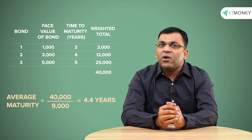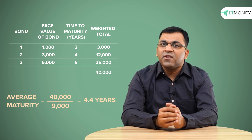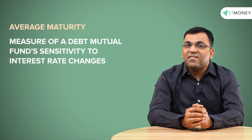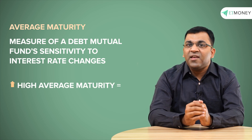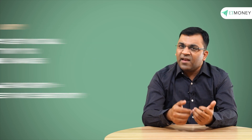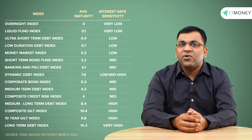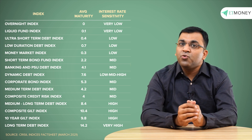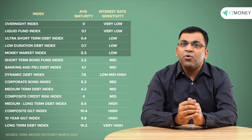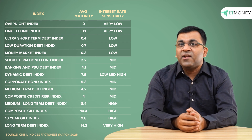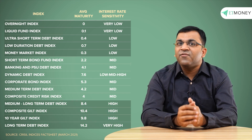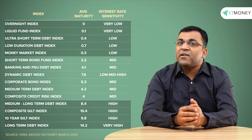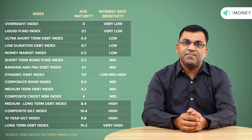The real question is: what does average maturity tell us and how do we use it when evaluating debt funds? Very simply, average maturity is a measure of the fund's sensitivity to interest rate changes. As a thumb rule, higher the fund's average maturity, higher is the interest rate sensitivity. Liquid, ultra-short-term, and low-duration funds have a low average maturity and therefore are not much affected by interest rate changes. However, long-duration and GILT funds have a much higher average maturity and consequently higher interest rate sensitivity.